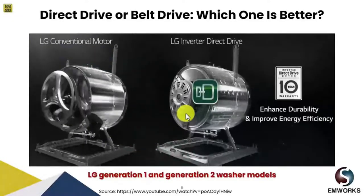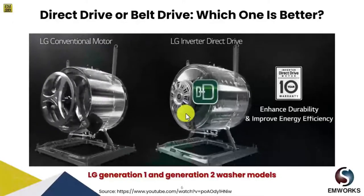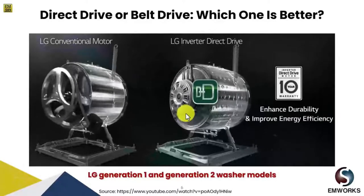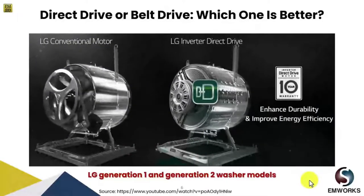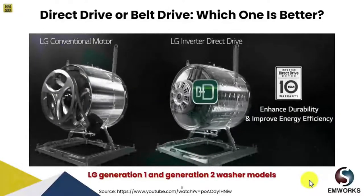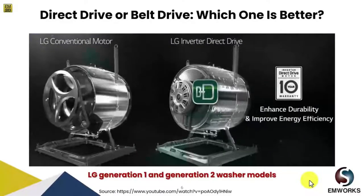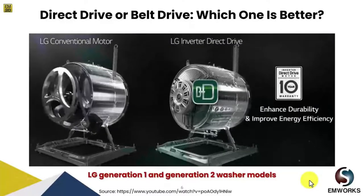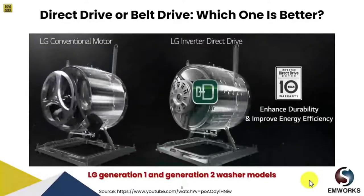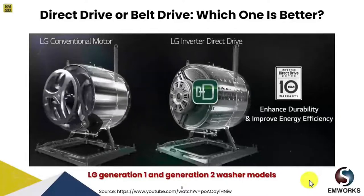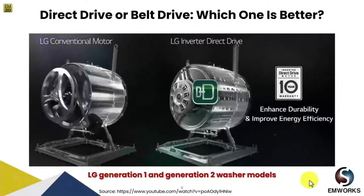This improved stability enhances durability and makes the system more energy efficient. In the battle of direct drive versus belt drive, everything comes down to your requirements and preferences. According to statistics, direct drive washing machines use 28% less power than belt drive washing machines, making them highly energy efficient and inexpensive to operate. However, direct drive washers cost around 38% more on average than belt-driven systems, so it would be wise to buy a belt-driven model if your usage remains on the lower side.